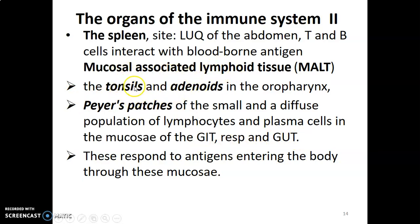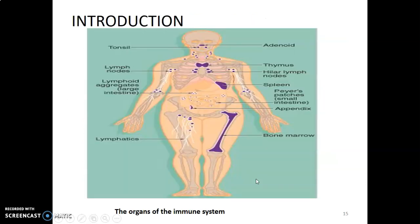We also have the tonsils and the adenoids in the oropharynx and nasopharynx, and Peyer's patches of the ileum. All of these are able to respond to antigens that try to enter the body through mucosal surfaces.